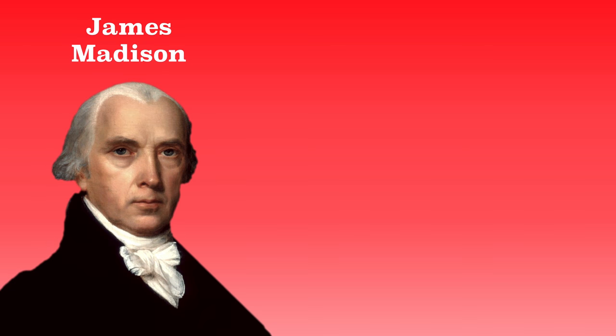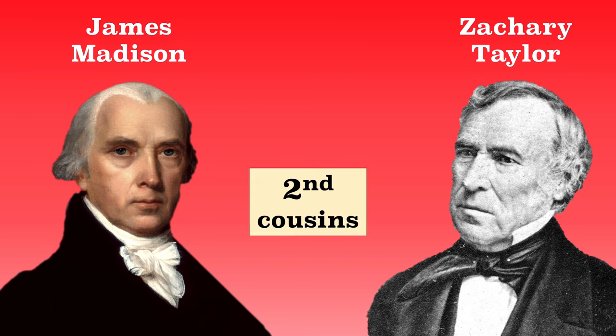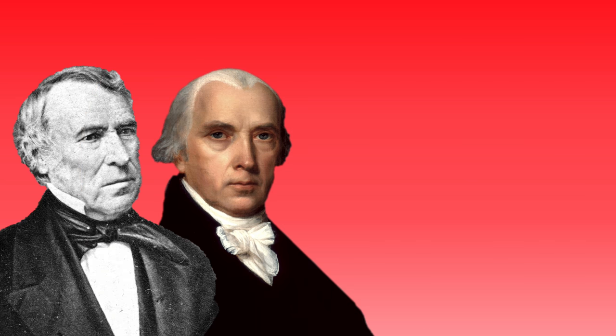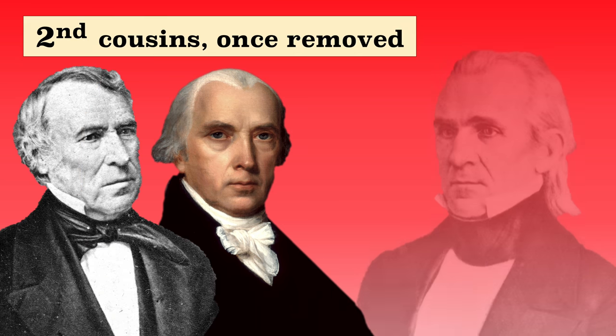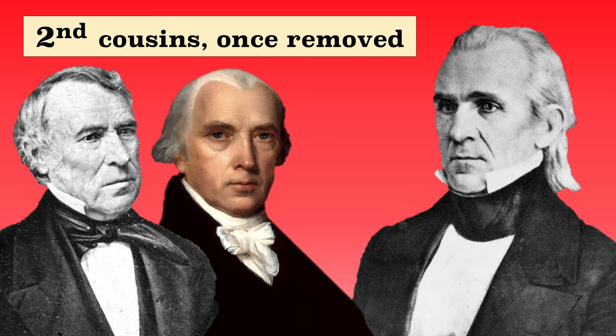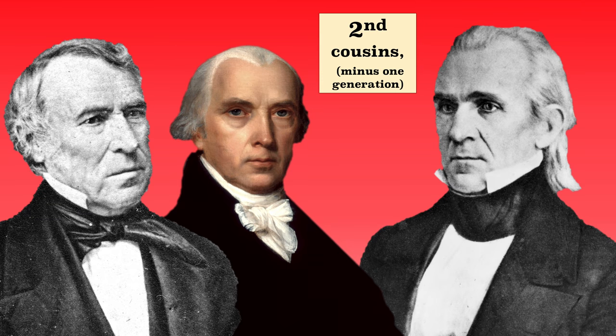Now get out your cousins' charts, because this is where it begins to get complicated. James Madison, the fourth president, and Zachary Taylor, the twelfth president, are second cousins. And Madison and Taylor are both second cousins once removed with James Polk, the 11th president. The term 'removed' is just a reference to the number of generations separating the cousins themselves, so Polk is second cousins with Madison and Taylor minus one generation.